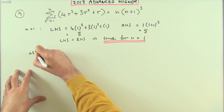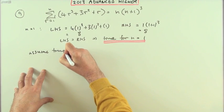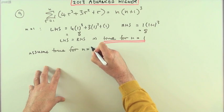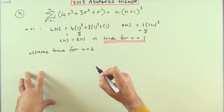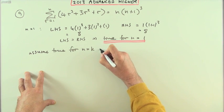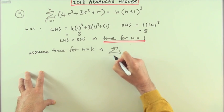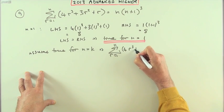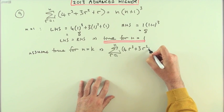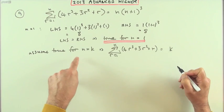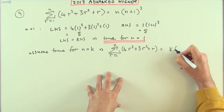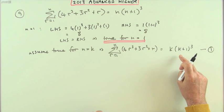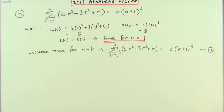Now assume it's true at some arbitrary point, k value of n k, inductive hypothesis. If that's the case, then that means sigma r equals 1 to k of that expression would equal k times (k plus 1) cubed.